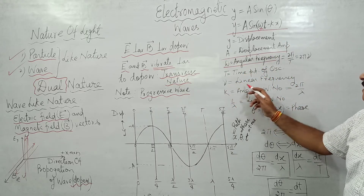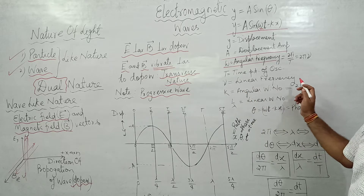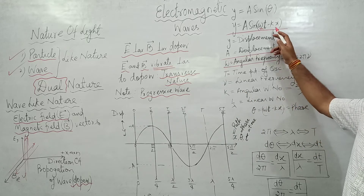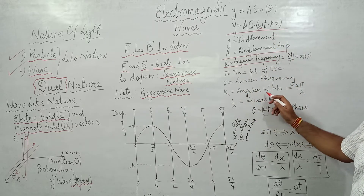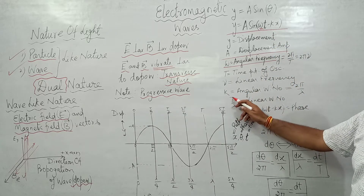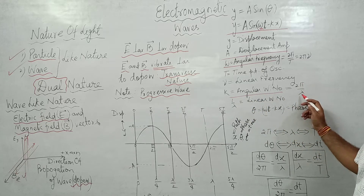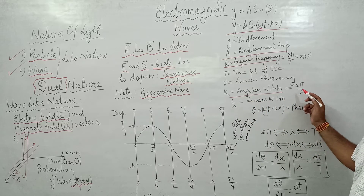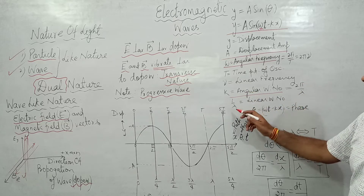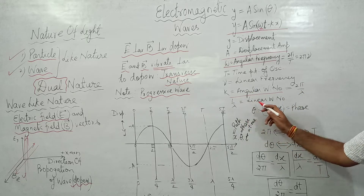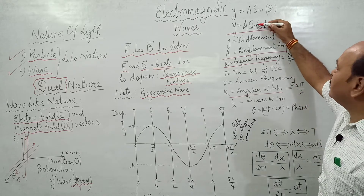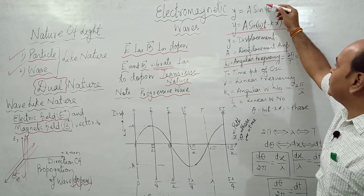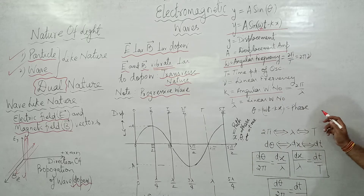ν is the linear frequency. The quantity k is called the angular wave number, which equals 2π/λ, and 1/λ is the linear wave number. The whole quantity in the bracket (ωt − kx) is called the phase.